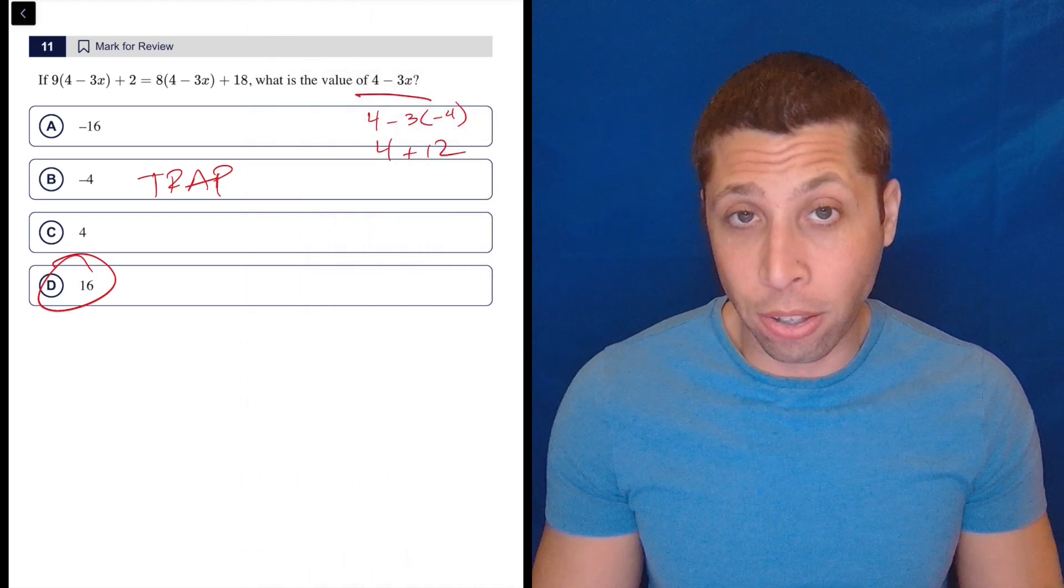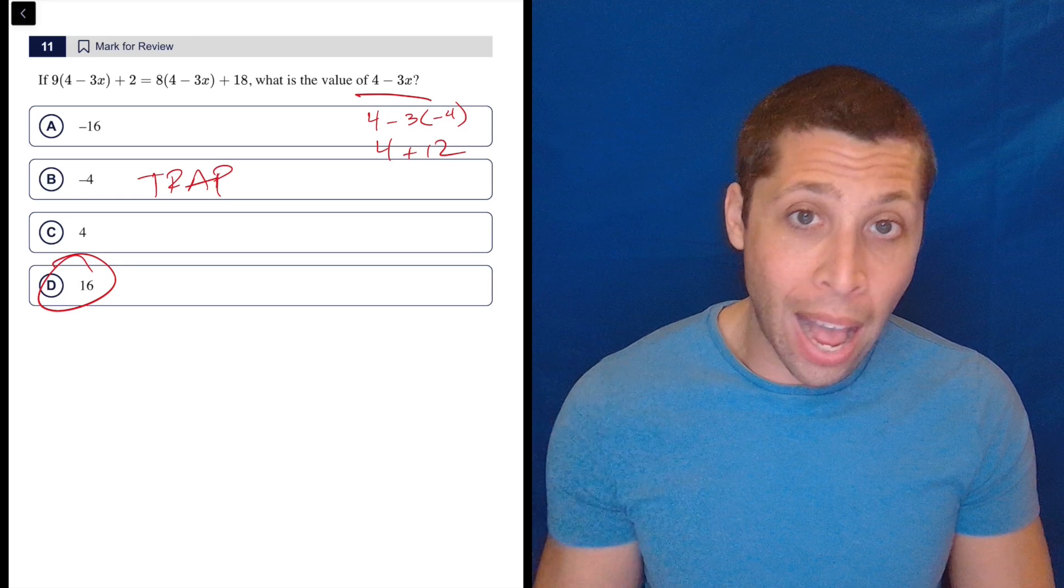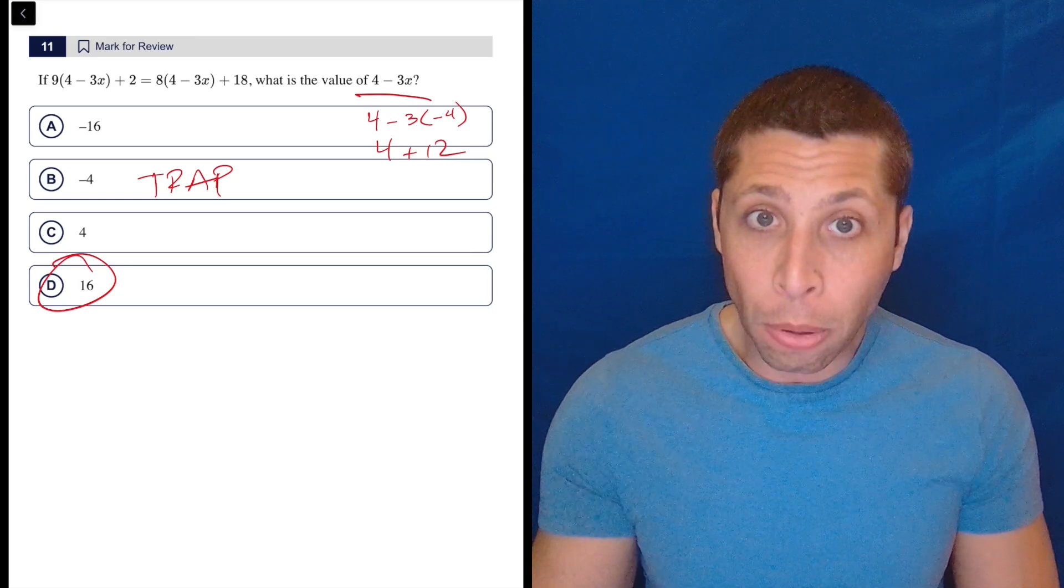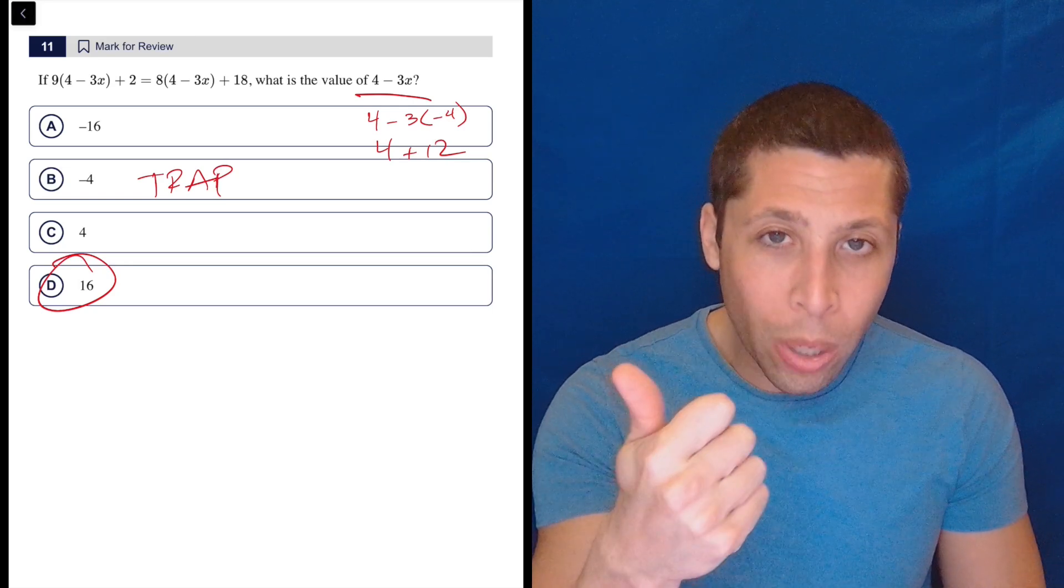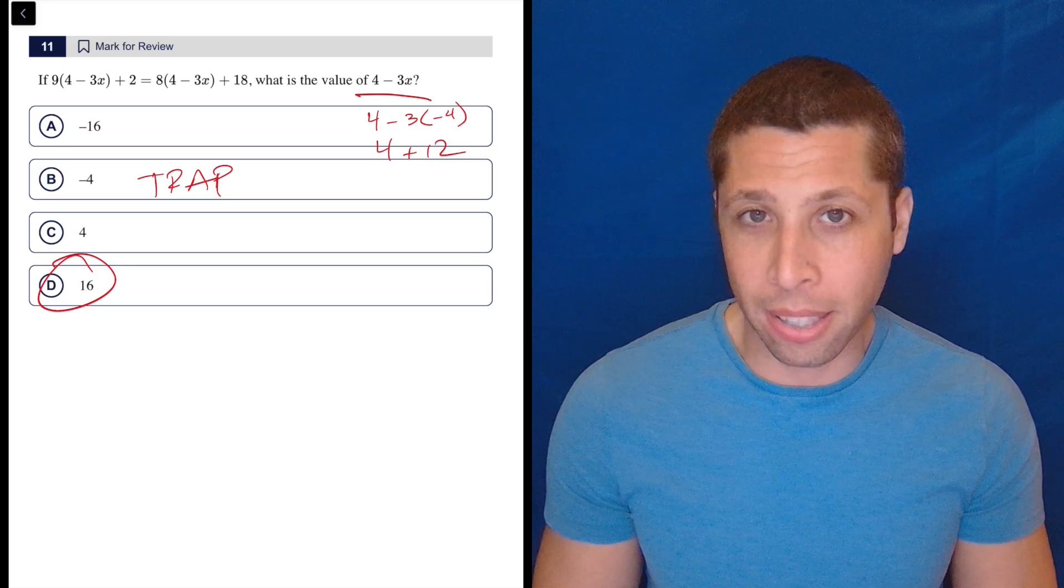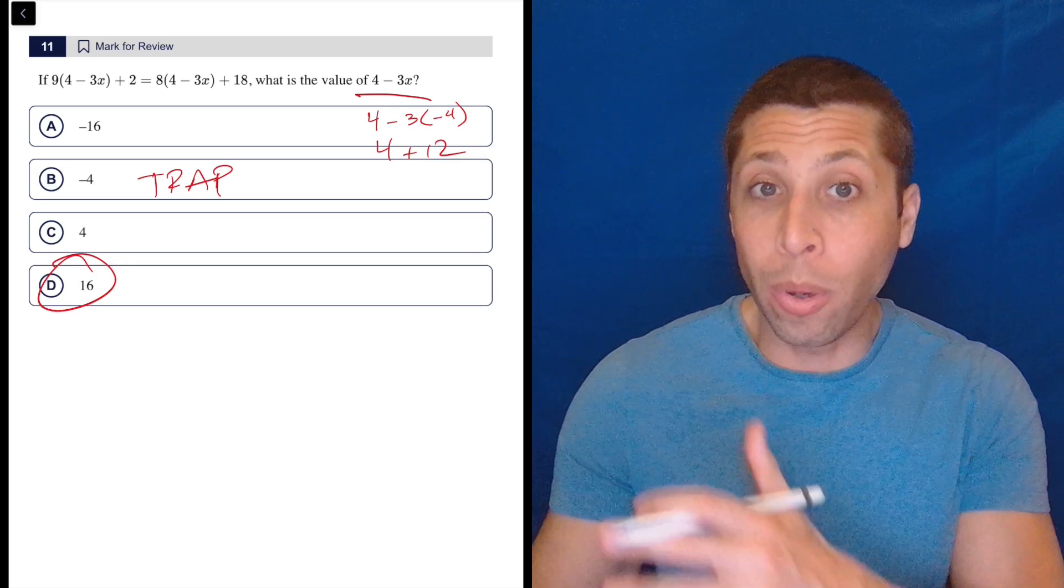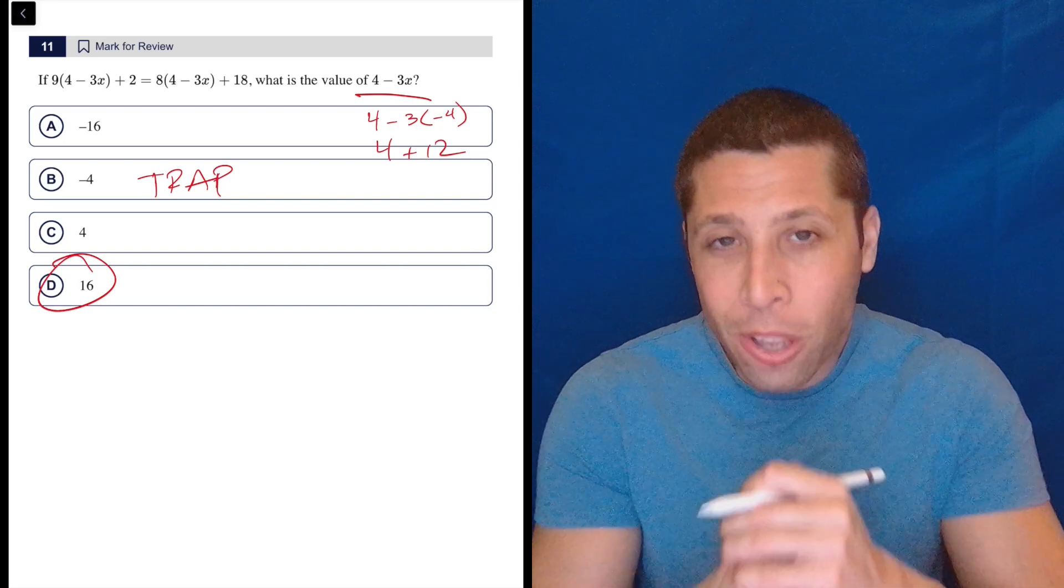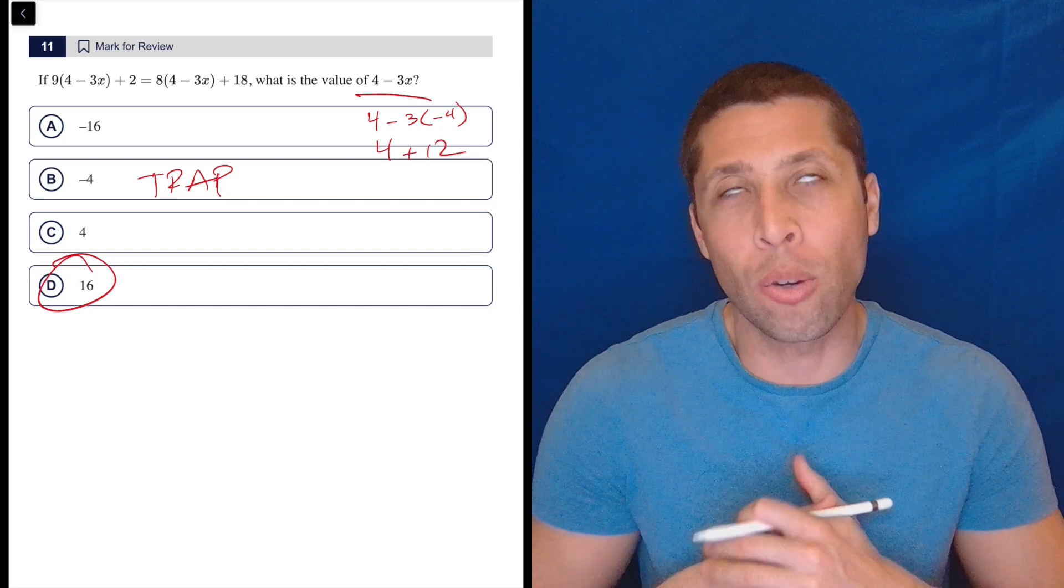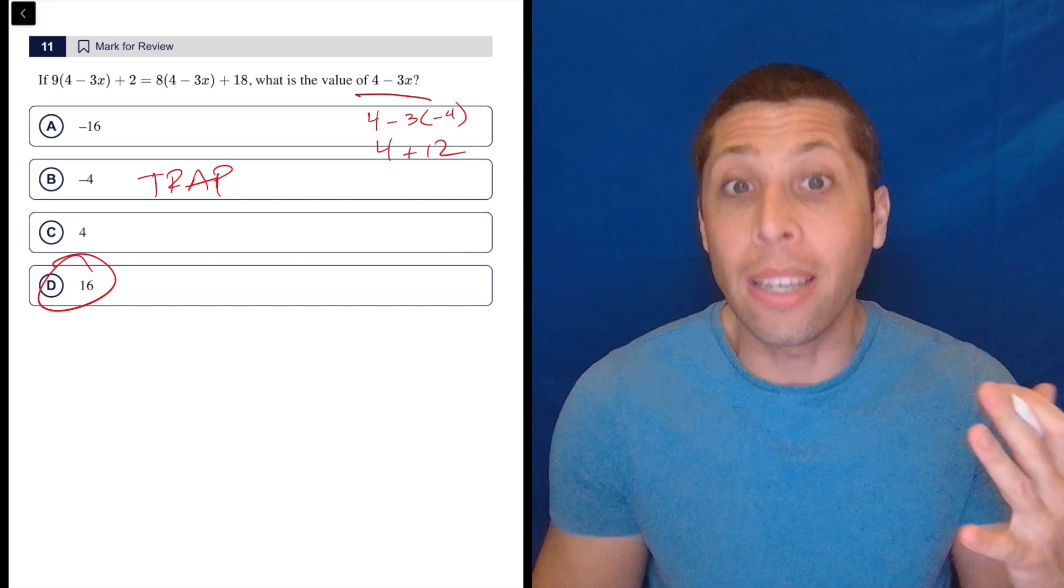So that is a reminder that no matter what, if you are asked to do algebra, double check that you are giving them what they want at the end because they will very often just tweak it slightly to see if you were paying attention. So the answer that you would get for X or for whatever the variable is will be an answer. They know that you're going to be tempted to pick it. So you can't rely on it just not being there. It will be there.